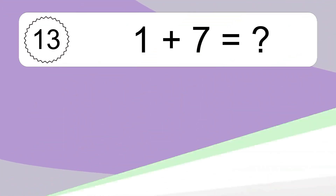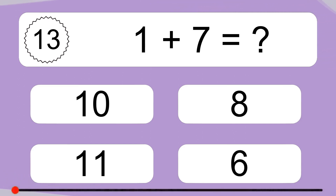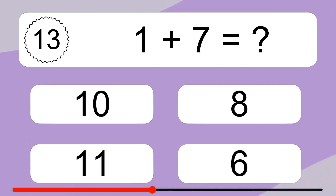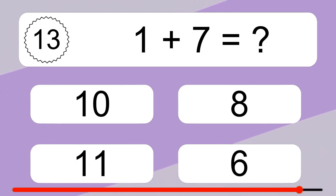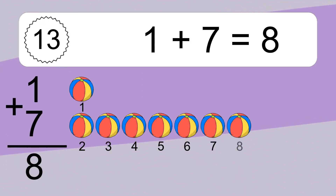1 plus 7 equals what? 1 plus 7 equals 8.